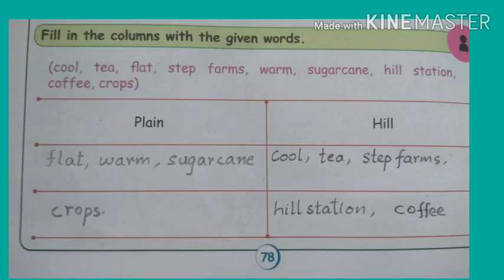Step form is a form of farming on hills, so it will come under the hill column. Warm is a temperature, so warm will come under the plain column. Sugarcane grows on flat land, so it will come under the plain column. Hill station will come under the hill column. Coffee grows on hills, so it will come under the hill column. Crops like paddy and wheat will come under the plain column.